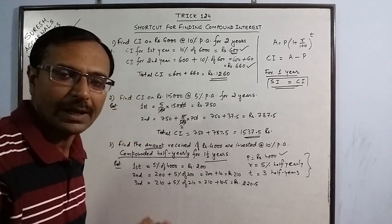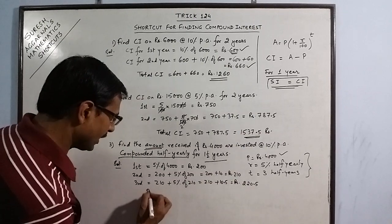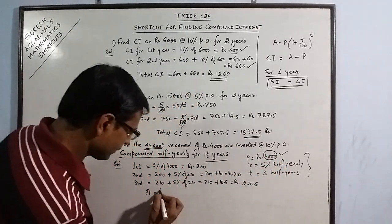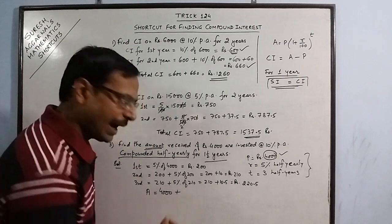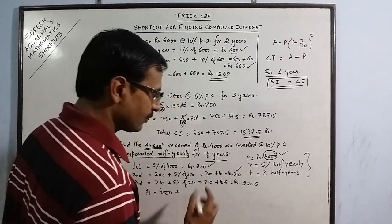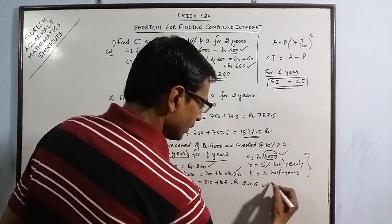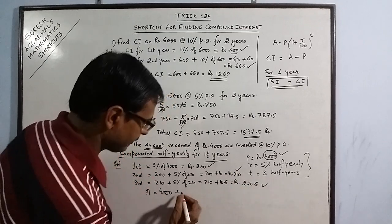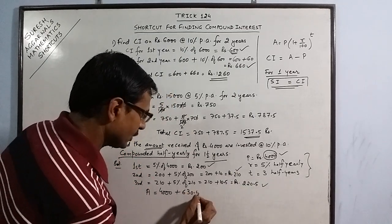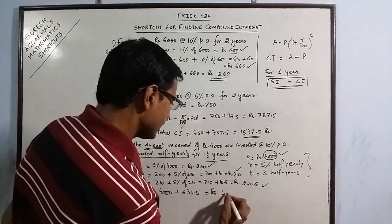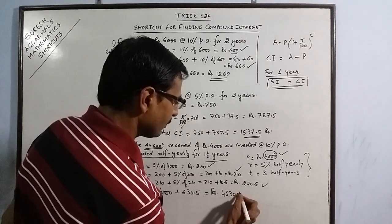We need to calculate the total amount received. Total amount received is principal amount was 4000, add total interest. Total interest is 200 plus 210 is 410, plus 220.5 is 630.5. The amount received after one and a half years is Rs. 4,630.50.